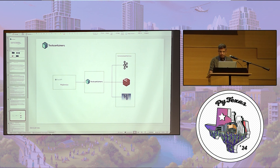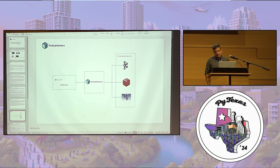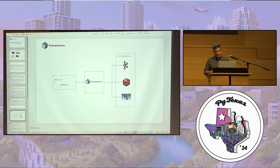Looking at this diagram, there is a service — which I'm calling 'my service' — and Testcontainers is an API responsible for spinning up test containers. For example, for Kafka it has a Kafka container, and for Redis it has a Redis container.